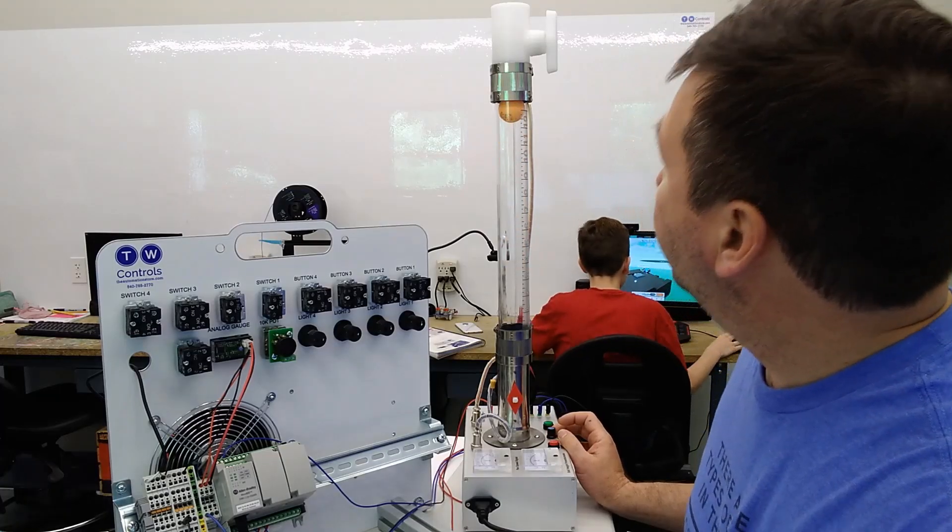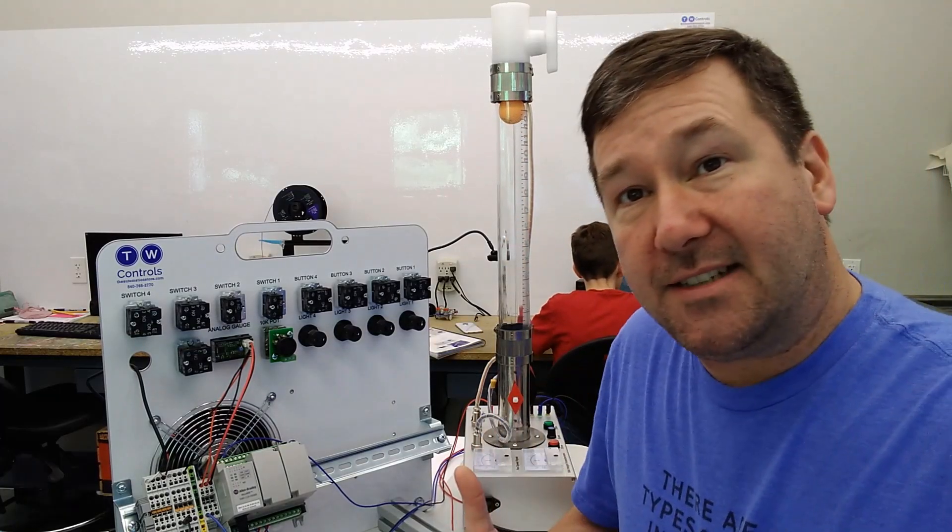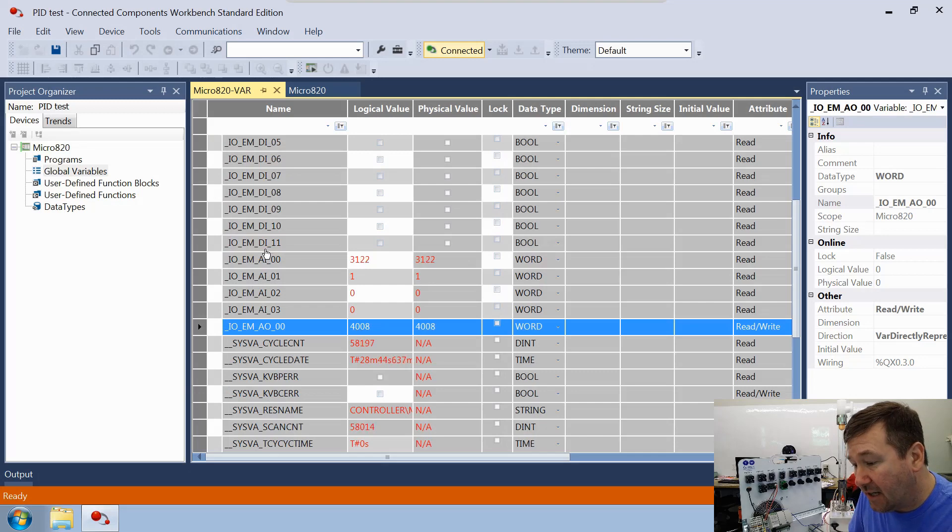So if we put 4,008 in here, then we're going to be right at the top of this. Our analog input is now showing about 3150. We're going to call that top 3150. So remember that for our next video, that's it.